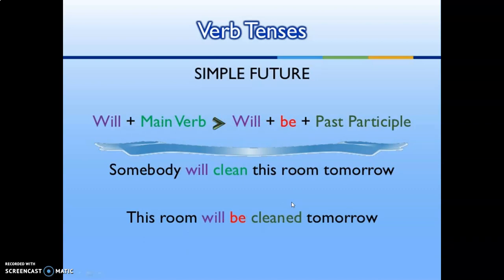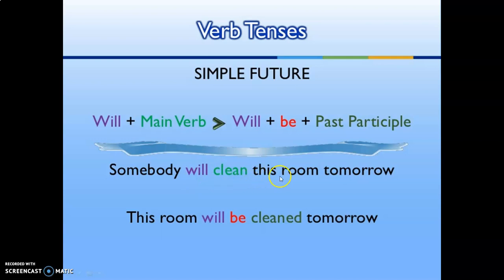For simple future tense, the rule is 'will' plus the main verb (active), and 'will' plus 'be' plus past participle (passive). Example: 'Somebody will clean this room tomorrow.' In passive voice: 'This room will be cleaned tomorrow.'